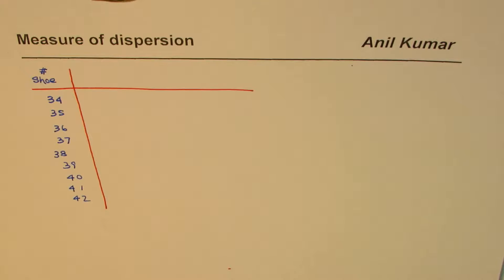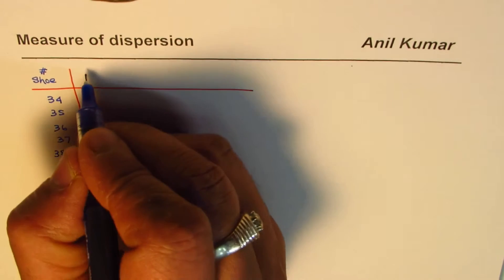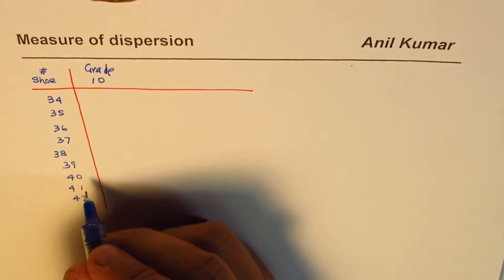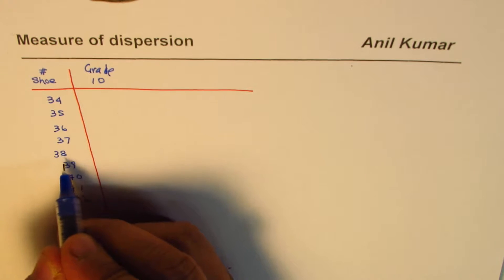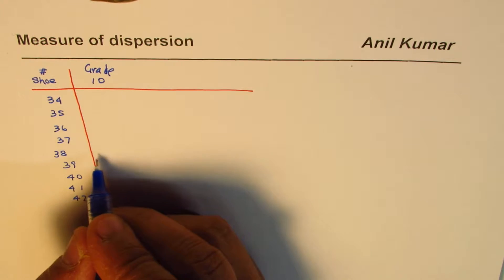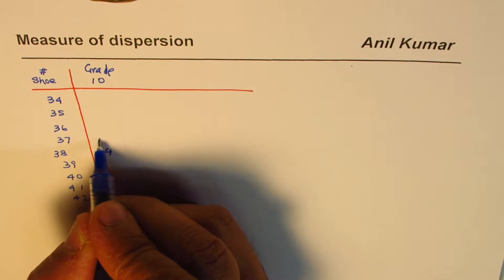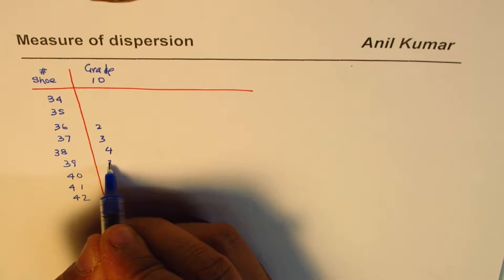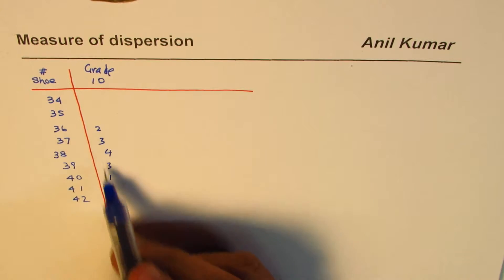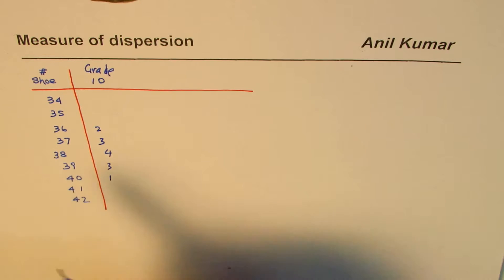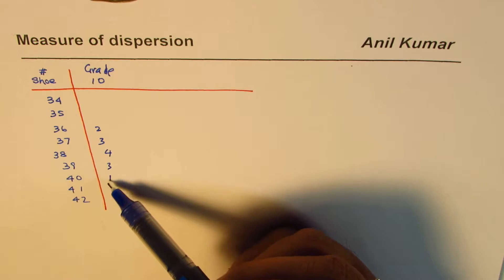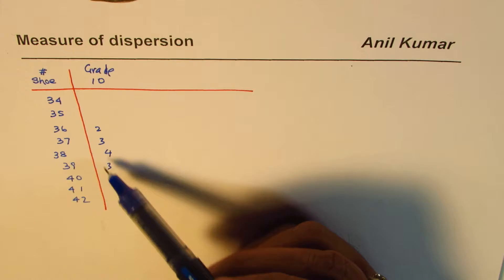Let's assume we do sample data for grade 10 students and we find that most students have a shoe size of 38. So let's say four students have size 38, three students have size 37, two students have size 36, and one student has size 39. That gives us a total of 13 students.